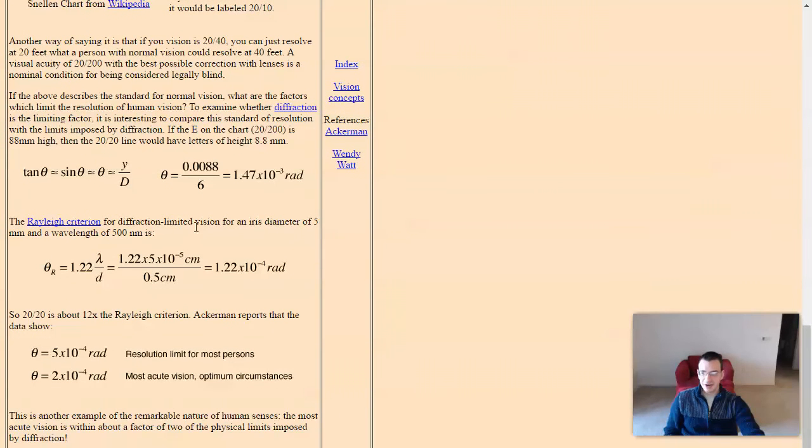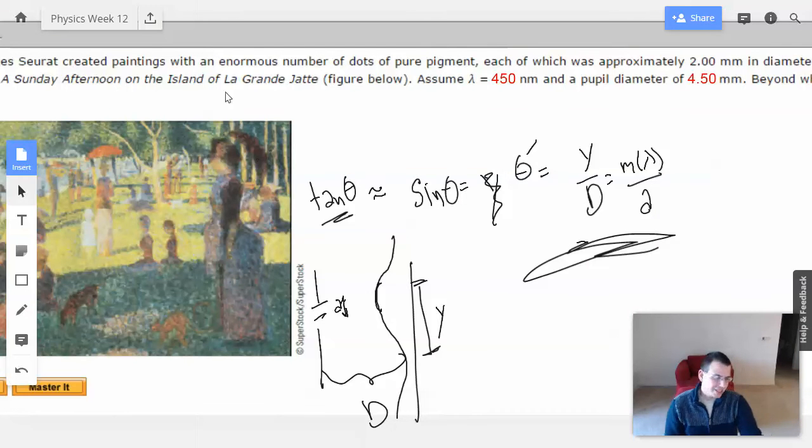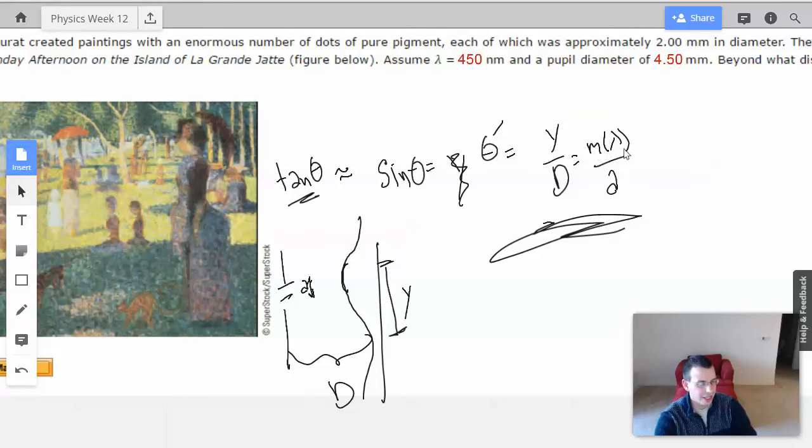The Rayleigh criterion for diffraction-limited vision for an iris of 5 millimeters and a wavelength of 500 nanometers. We have this number of radians that we can differentiate between. We have 1.22. I don't know where the 1.22 comes from. I think it has to do with the idea that the iris is circular. Just know that you can't take the tangent of pi over 2, and when you're talking about an iris, you have to use 1.22 instead of M.